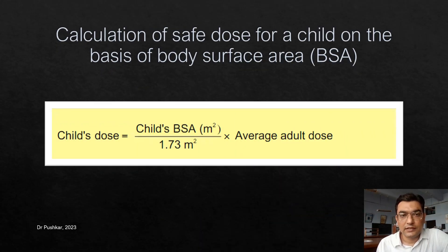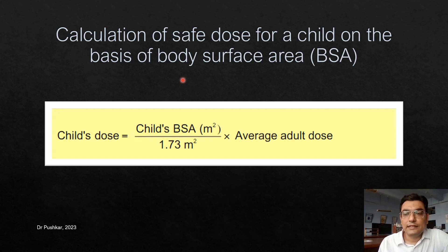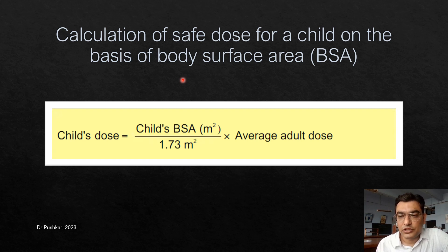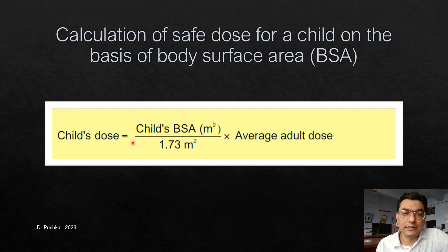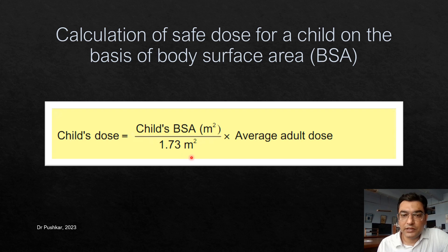Another method to calculate the safe dose is based on the body surface area (BSA) of the child. It is not routinely used because it is more complicated, but it is applied in cases such as cancer, where anti-cancer drugs are given. The formula is: Child's dose equals child's BSA in square meters divided by 1.73 square meters, multiplied by the average adult dose.